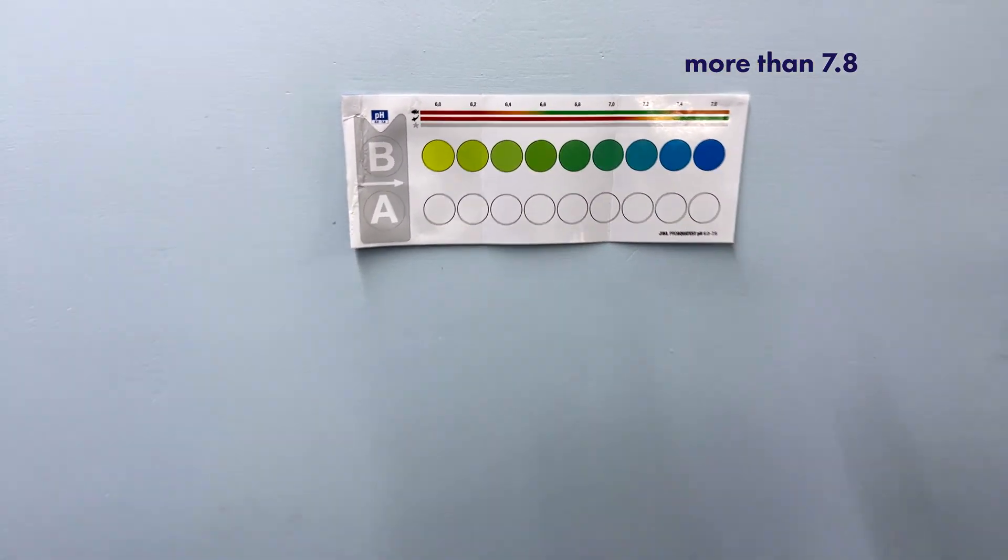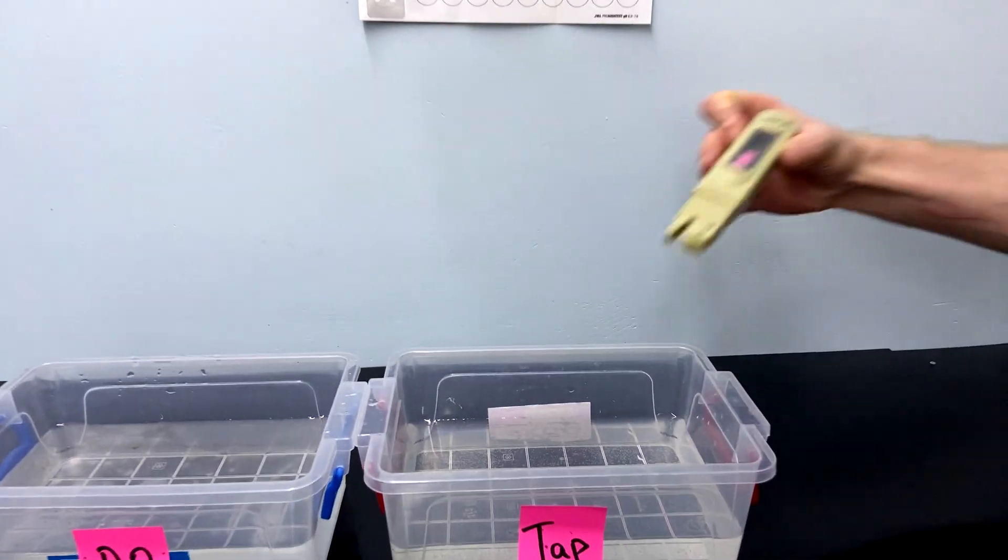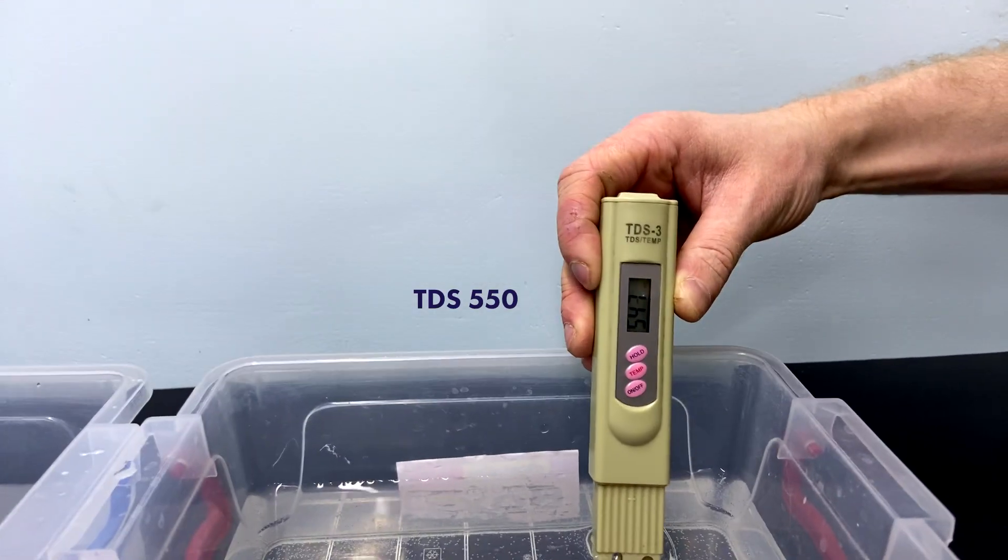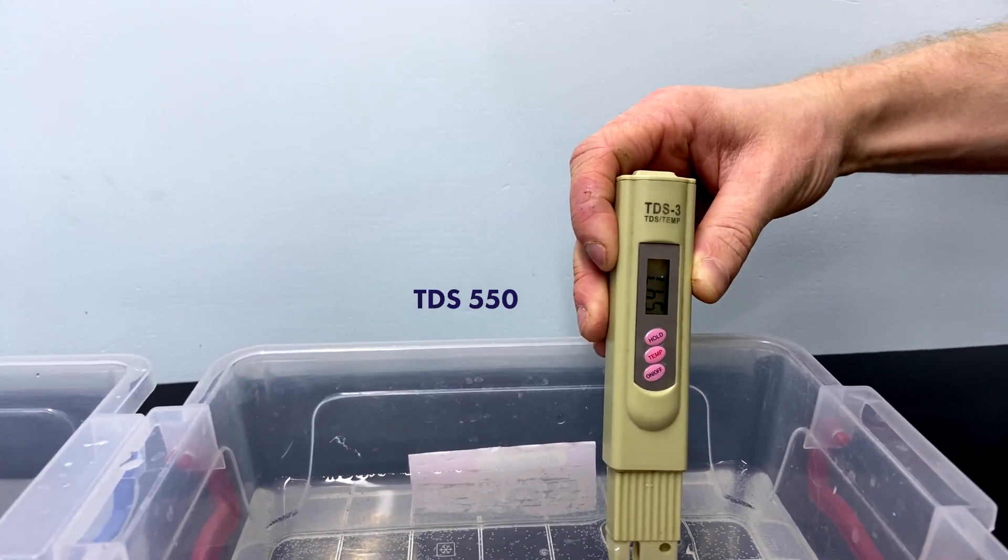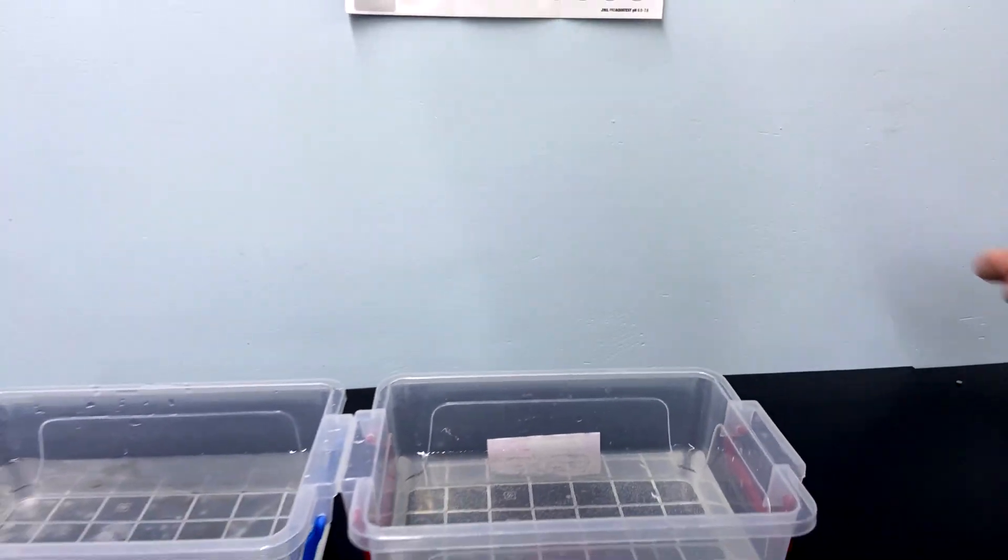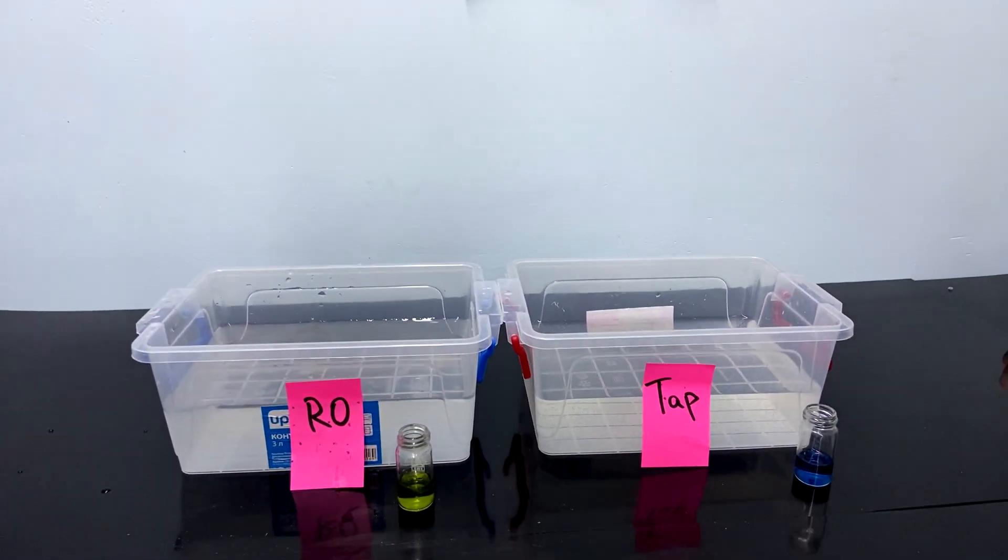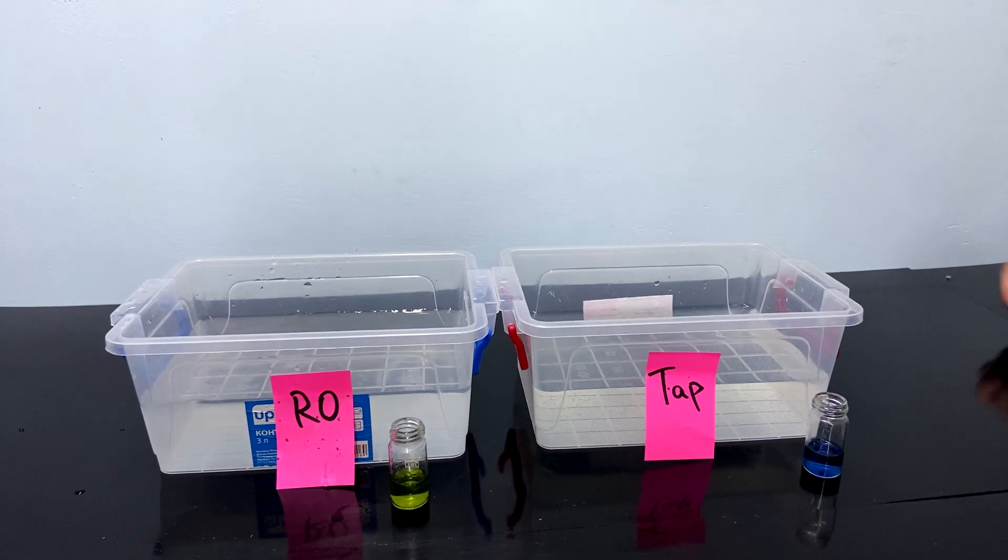Let's now measure TDS. 550 is too much. Actually, it's not good if you plan to breed zebras.